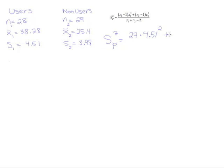Then we'll add to that 29 minus 1, or n2 minus 1, which is 28, times the standard deviation squared. So 3.98 squared.